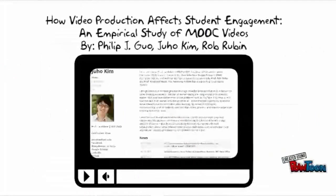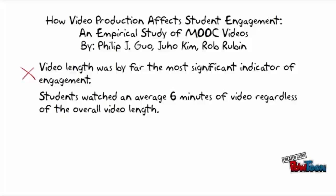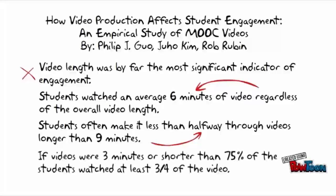We'll start with a little bit of research from Juho Kim and colleagues. In their study, 'How Video Production Affects Student Engagement: An Empirical Study of MOOC Videos,' video length was by far the most significant indicator of engagement. Students watched an average of six minutes of video regardless of the overall video length, and often made it less than halfway through videos longer than nine minutes. If videos were three minutes or shorter, then 75 percent of students watched at least three quarters of the video.